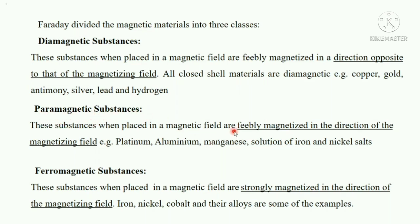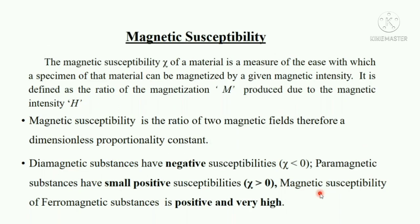Paramagnetic substances are those which, when placed in a magnetic field, are feebly magnetized in the direction of the magnetizing field. Platinum, aluminum, manganese, and solutions of iron and nickel are some examples. Finally, ferromagnetic substances are those which, when placed in a magnetic field, are strongly magnetized in the direction of the field. Iron, nickel, cobalt, and their alloys are examples.